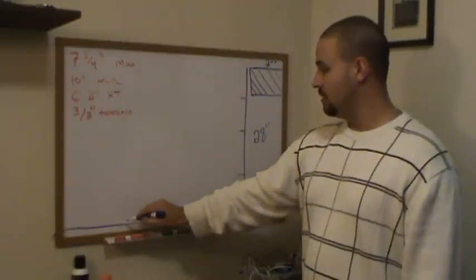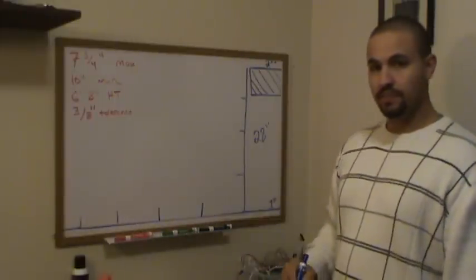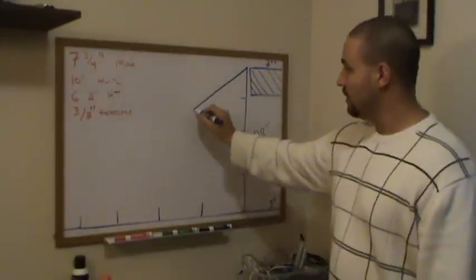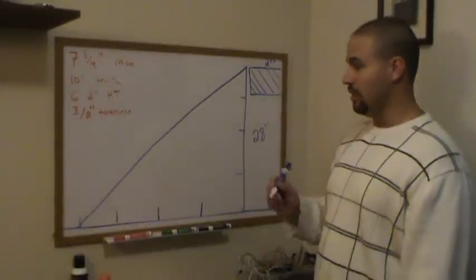10 inches again, 10, and 10. There are our 4 steps. Now we will create a triangle from the top of the second floor, down to the last number, 40 inches for our run.